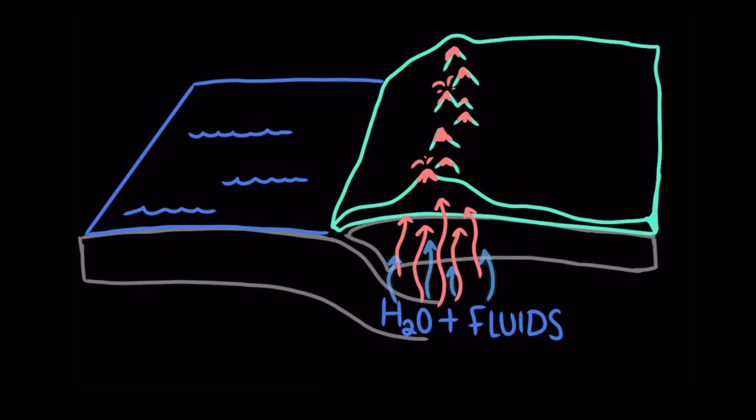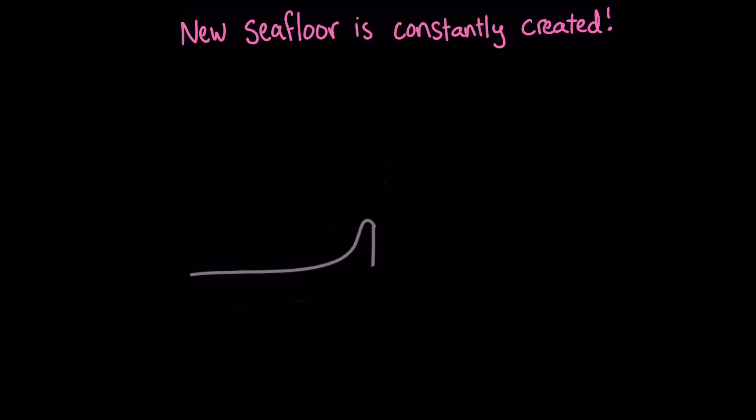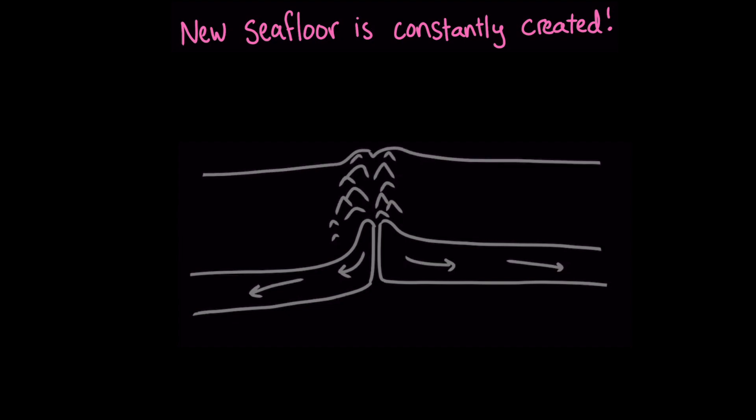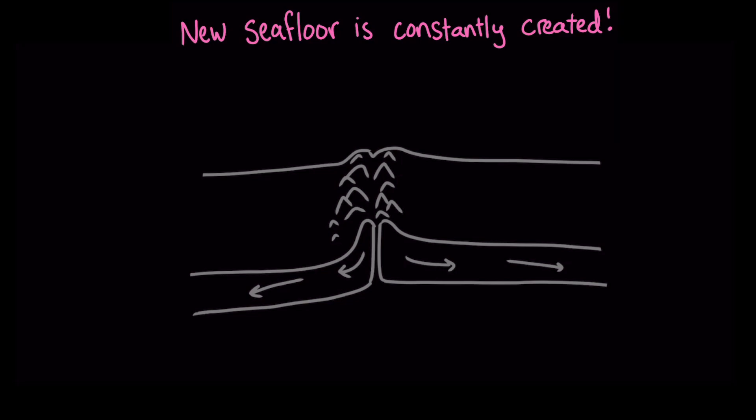And you might be wondering, if the seafloor is constantly being destroyed, then what keeps the earth from shrinking? Well, new seafloor is constantly being created too. This happens when two tectonic plates move away from each other at a divergent boundary. When two plates diverge in the middle of an ocean, it creates a kind of underwater mountain range called a mid-ocean ridge.